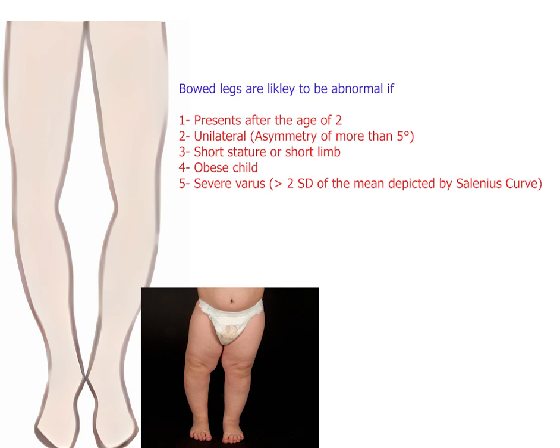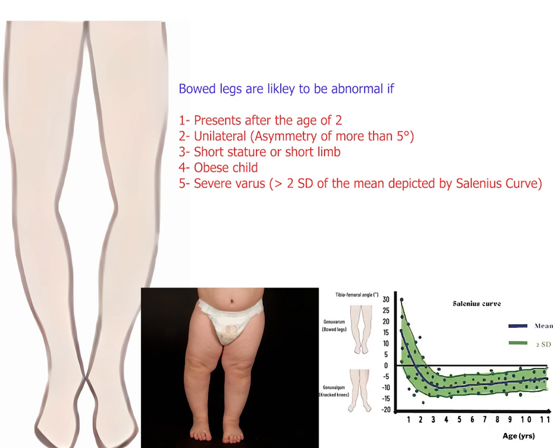If the child is of short stature, has short limbs, or is overweight, these should also alert clinicians and parents that there may be a problem. Additionally, if the bow legs are severe — outside the green area of the normal range on the Salenius curve — that is another indication something may be wrong.